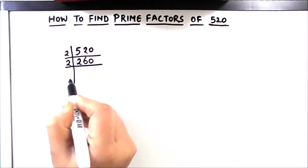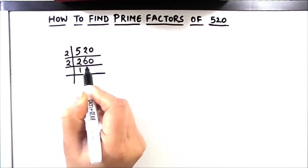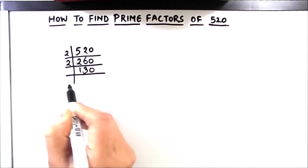Again we can divide it by 2 fully without leaving a remainder. So 2 times 1 is 2, 2 times 3 is 6 and 2 times 0 is 0.